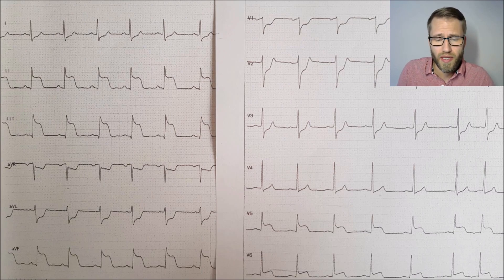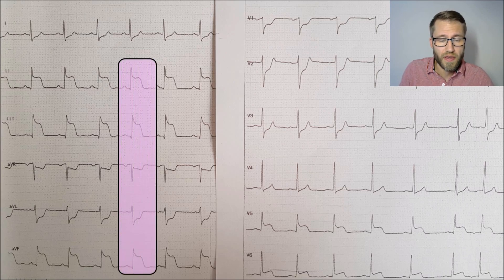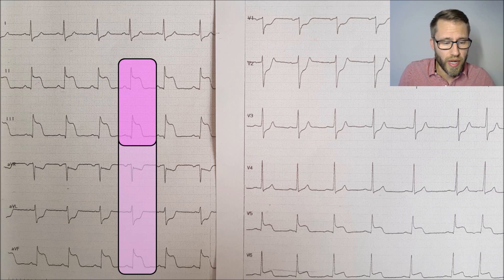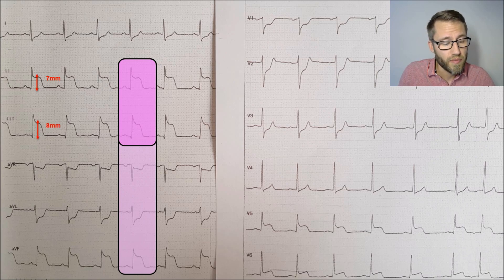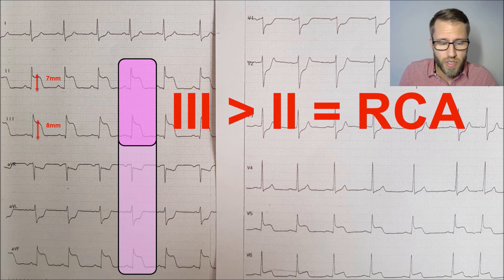There is a way I want to show you — it's not always right, but it gives you a better chance of choosing the correct culprit vessel. Have a look at the inferior limb leads and especially at lead 2 and lead 3. What we want to do is measure the size of the ST elevation in leads 2 and 3. In this example, you have an ST elevation of 7 mm in lead 2 and 8 mm in lead 3.